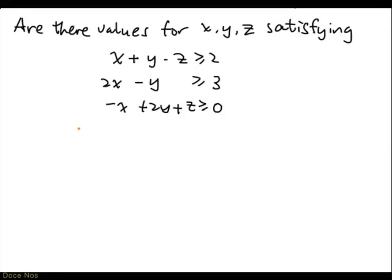Are there variables for x, y, z satisfying the following inequalities? x plus y minus z greater than or equal to 2, 2x minus y greater than or equal to 3, minus x plus 2y plus z greater than or equal to 0.